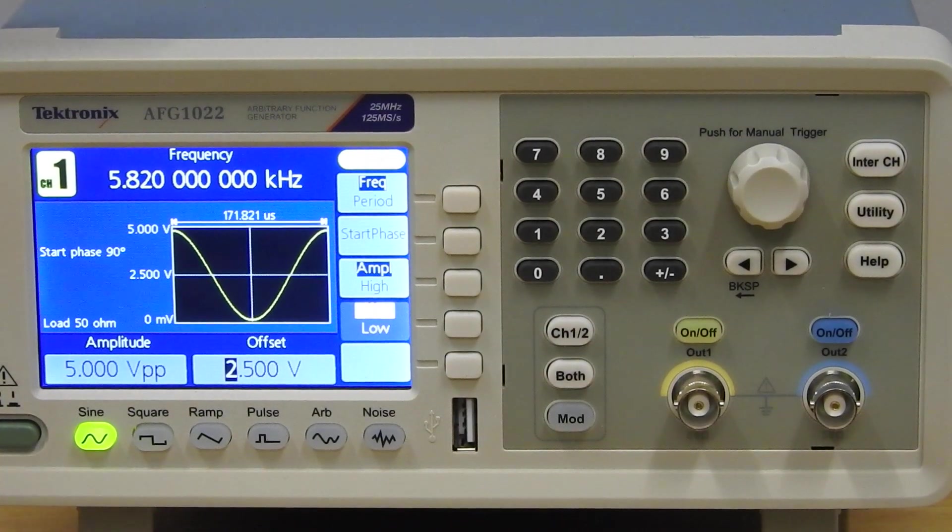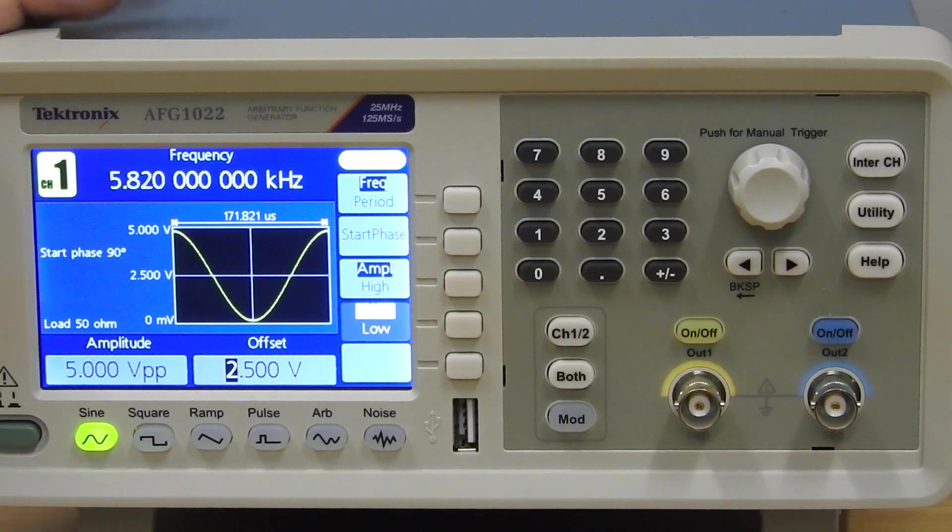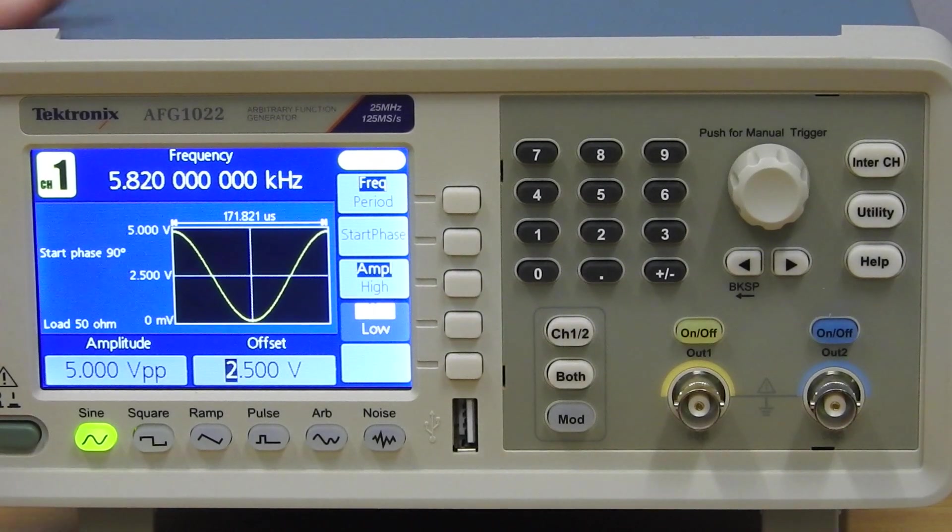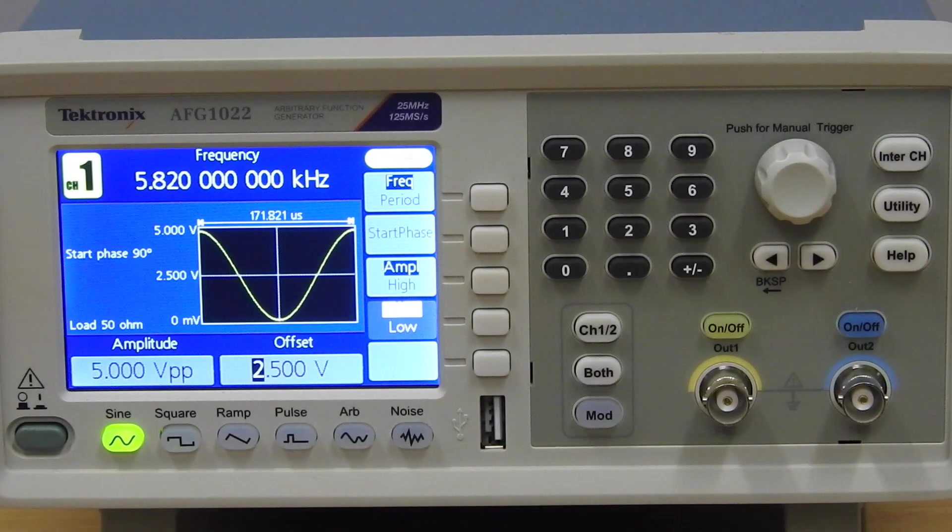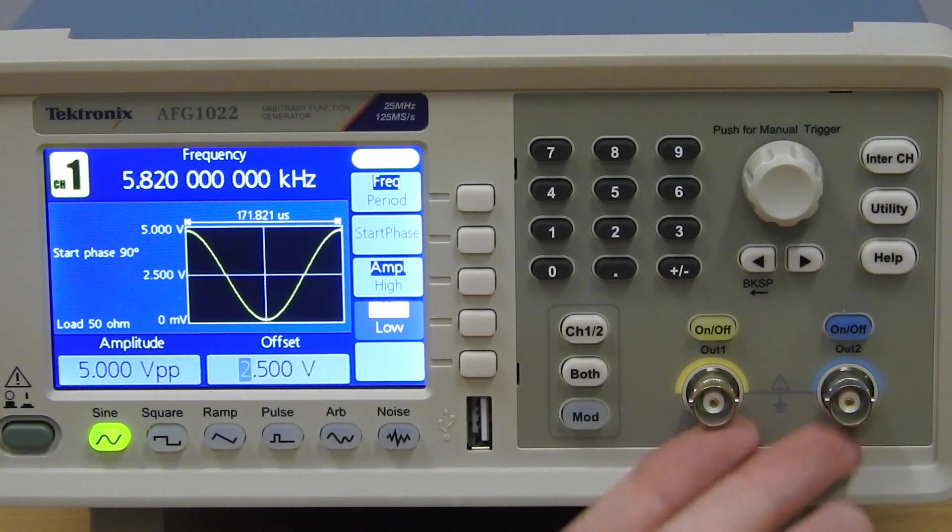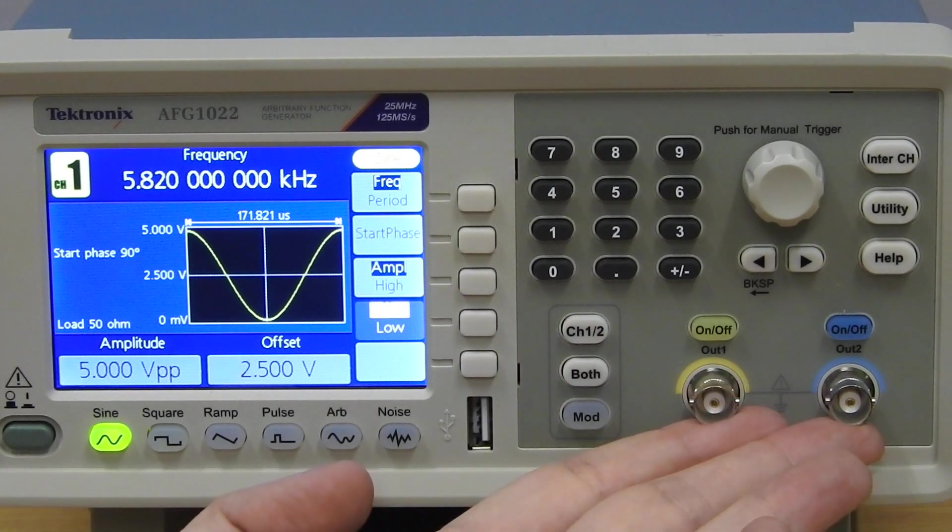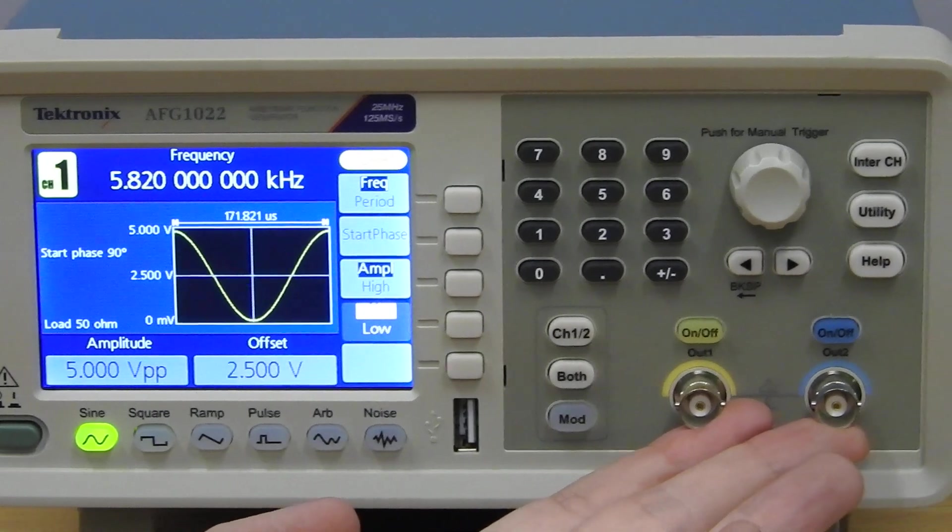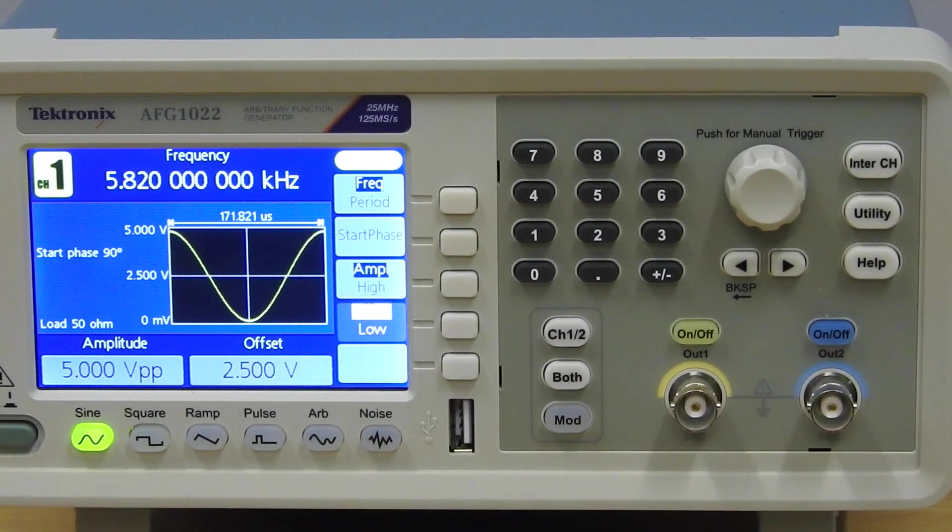This signal generator is for high frequency users and for general purposes. What that means is we can adjust the impedance of our output ports. If you look here on the side, channel 1 is currently set to give out to a load of 50 ohms.